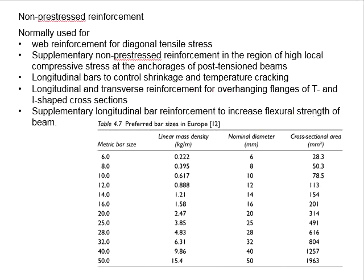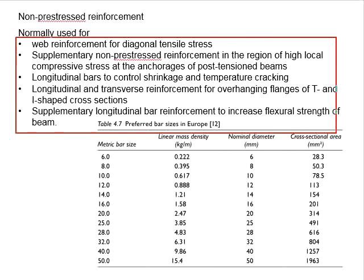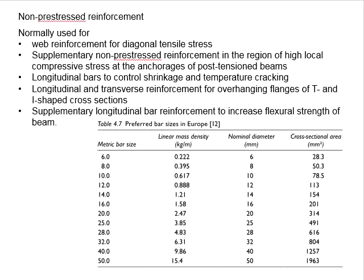Non-pre-stress reinforcement bars are also used as supplementary longitudinal reinforcement to increase the flexural strength of beams. Overall, the applications of non-pre-stress reinforcement bars mainly supplement the pre-stressing steel in pre-stressed concrete members — used as shear links, to strengthen the member in compression and flexural strength, to control cracking, and to form the shapes of the pre-stressed member.